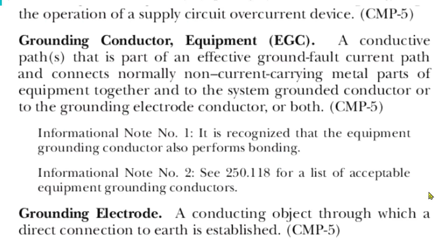Now let's move to equipment grounding conductors, or EGCs. Here's the definition of EGC found in Article 100 of the NEC: grounding conductor, equipment — that's equipment grounding conductor — a conductive path or paths that is part of an effective ground fault current path and connects normally non-current-carrying metal parts of equipment together and to the system grounded conductor. That would be your service neutral conductor, or to the grounding electrode conductor, or both. Informational note number one: it is recognized that the equipment grounding conductor also performs bonding.